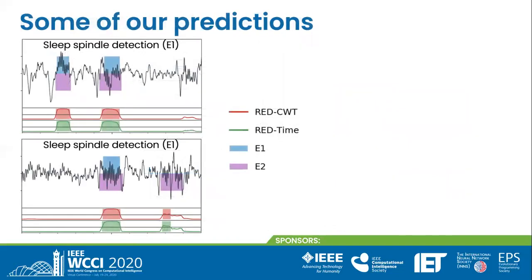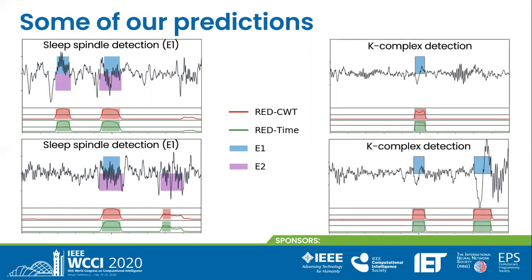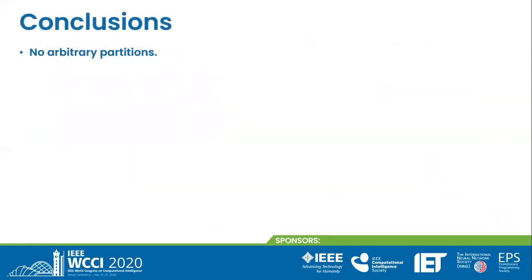Here, we illustrate our predictions in sleep spindle detection according to expert 1. We plot the expert annotations over the signal and the predictions of our model below, with the solid line representing the probability and the shaded areas representing the detections. The intersection agreement is high, as mentioned in the previous results. We also illustrate our predictions in K-complex detection, where the intersection agreement is even higher. You can see that RED time and RED CWT produce similar outputs in both cases.